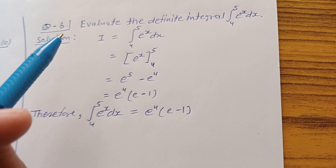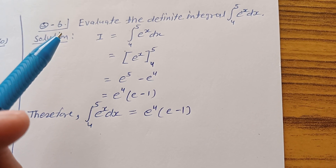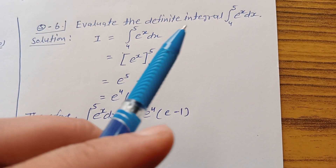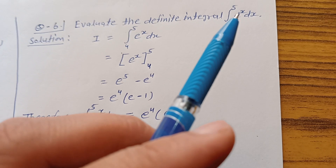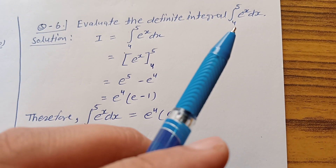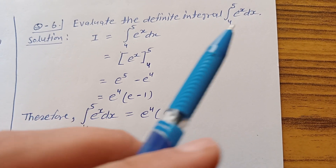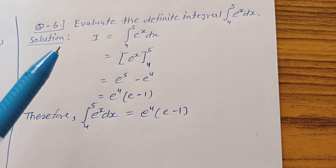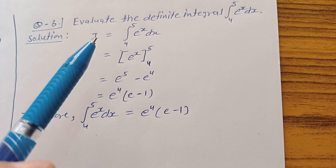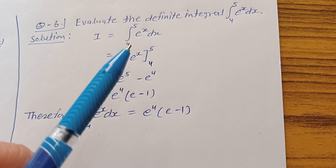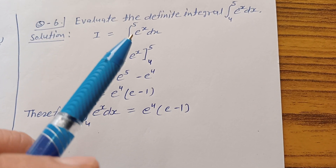Explain question number 6, exercise 7.9, class 12th, definite integrals. Integration limit 4 to 5 of e power of x dx. Solution: take I is equal to integration with limit 4 to 5 of e power of x dx.